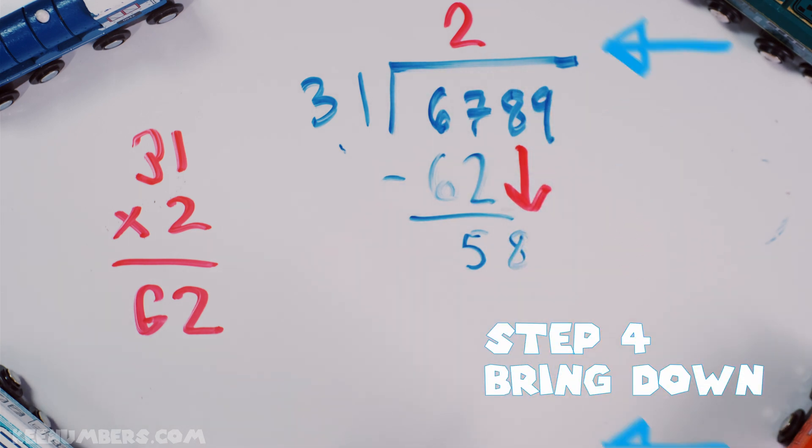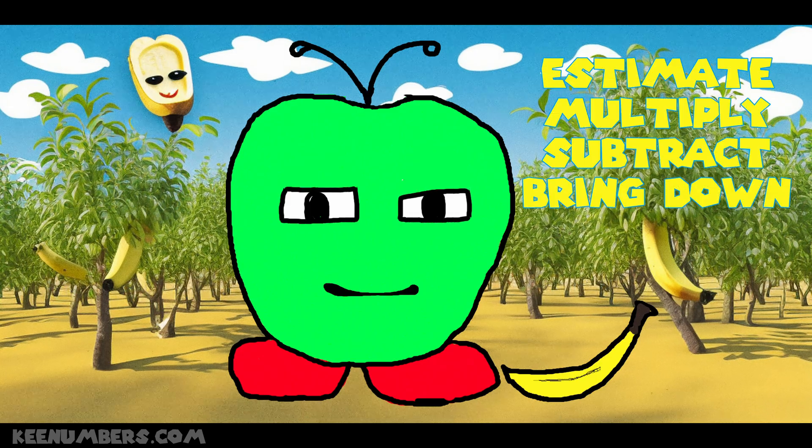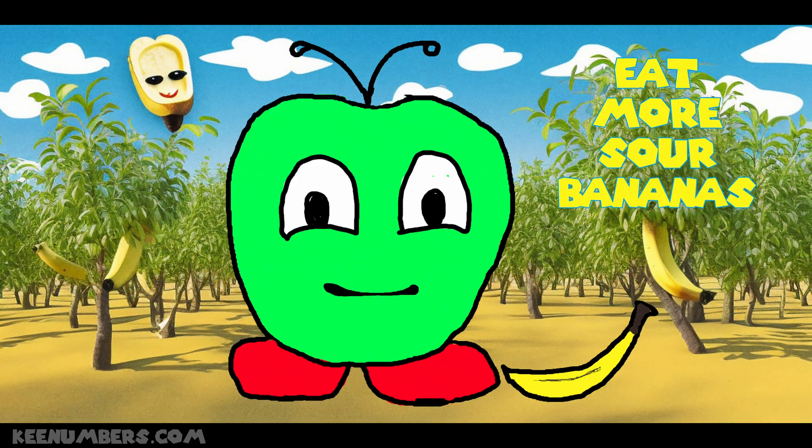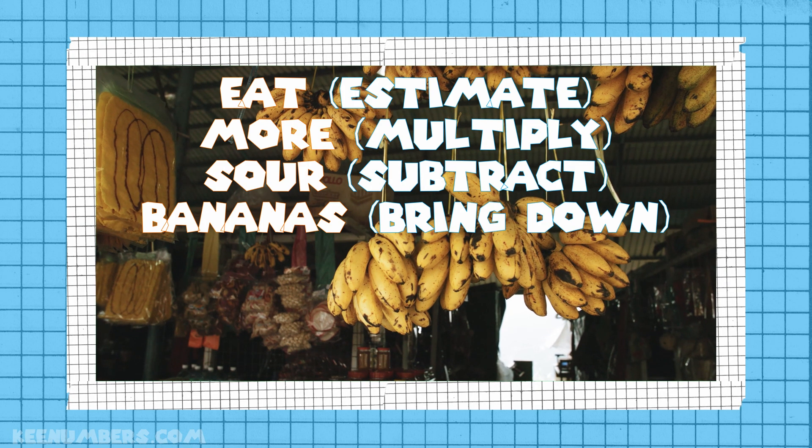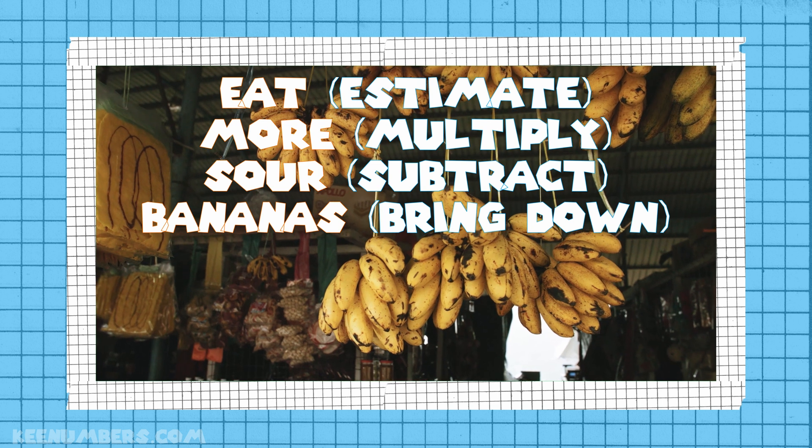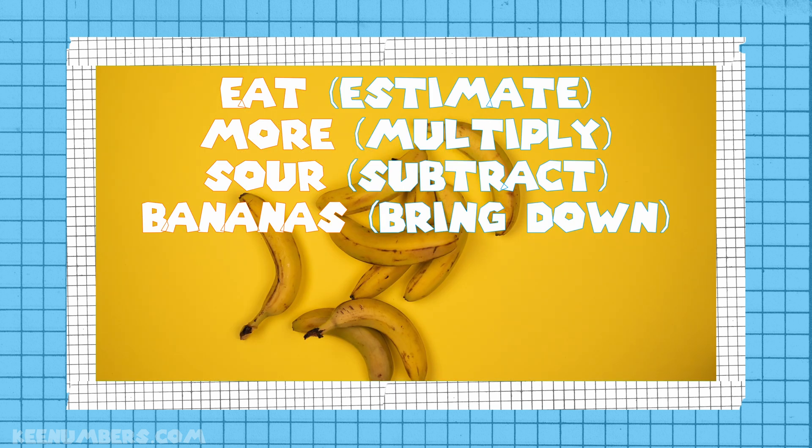And now you're gonna repeat all over again. You can remember this by saying estimate, multiply, subtract, bring down. Or, a nifty way to remember that sequence is to say eat more sour bananas.